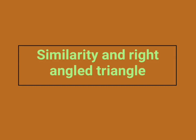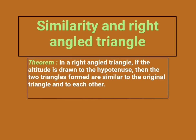Hello friends, welcome to Supreme Education. We are going to learn one theorem about similarity and right angle triangles. The statement of this theorem is: in a right angle triangle, if the altitude is drawn to the hypotenuse, then the two triangles formed are similar to the original triangle and similar to each other.